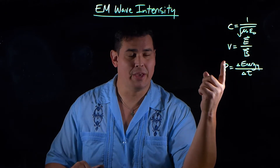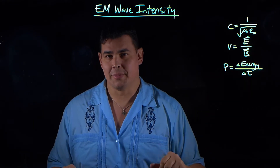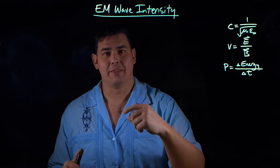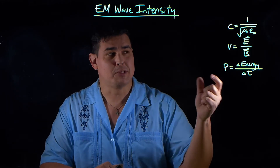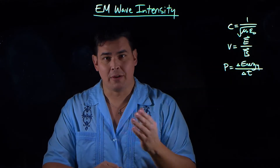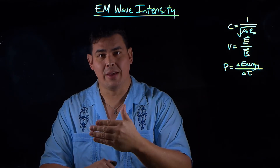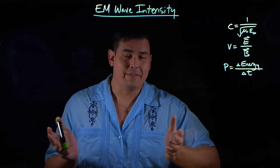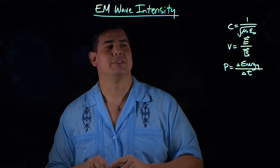We can also get the speed of any electromagnetic wave from the ratio of the electric field to the magnetic field. If you divide the electric field component by the magnetic field component, that gives you the speed of the wave. I'm not using C because this works for any wave — when you put light through glass or water, the wave actually slows down. We'll get to that when we cover Snell's law.